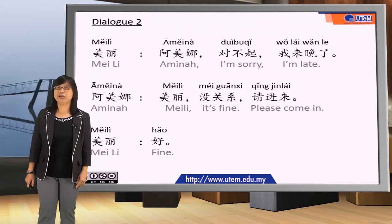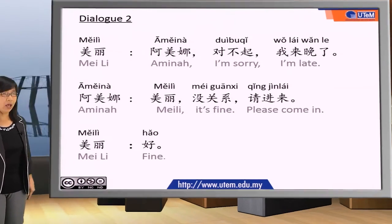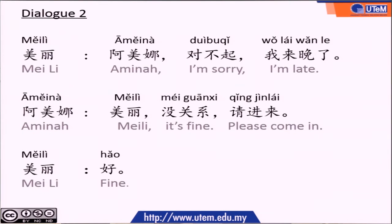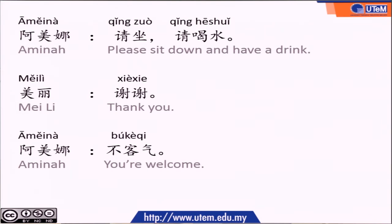Let's see a conversation between 美丽 and 阿美娜. When 美丽 came late, she said 阿美娜,对不起,我来晚了, which means 阿美娜, I'm sorry, I'm late. And 阿美娜 responded 美丽,没关系,请进来, meaning 美丽, it's fine, please come in. 美丽 said 好, meaning fine. While in the house, 阿美娜 invited 美丽 to sit down and have a drink, saying 请坐,请喝水, meaning please sit down and have a drink. 美丽 said thank you and 阿美娜 responded 不客气, which means you are welcome.